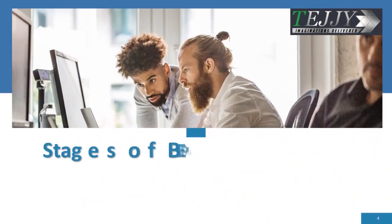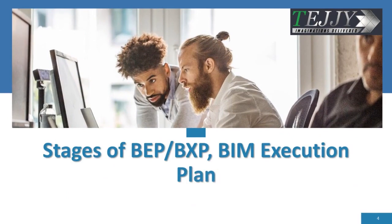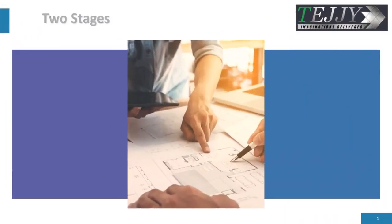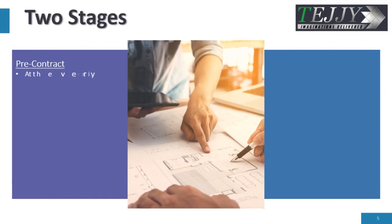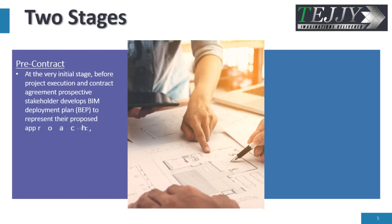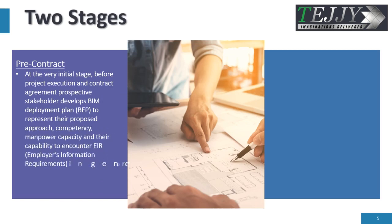Stages of BEP/BXP — BIM Execution Plan has two stages. Pre-Contract: At the very initial stage, before project execution and contract agreement, the prospective stakeholder develops a BIM Deployment Plan, BEP, to represent their proposed approach, competency, and manpower capacity.